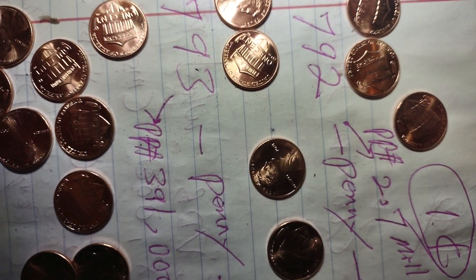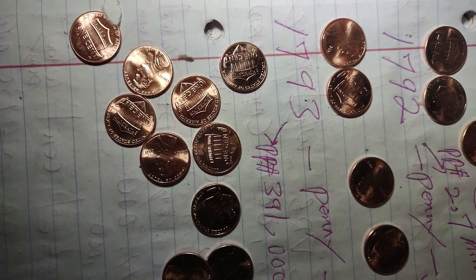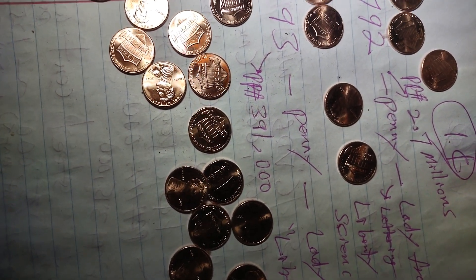So, 1792 penny is over 2 million, close to 3 million dollars. 1793 penny is over $300,000, almost $400,000.